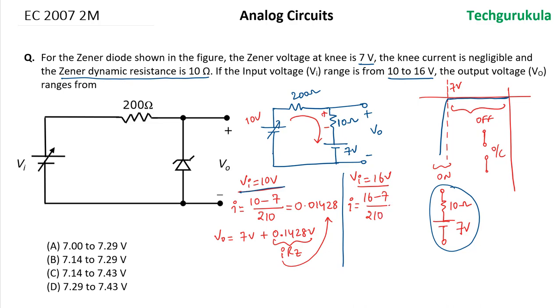Now if you multiply this with the resistance Rz, we will get the voltage drop across Rz.